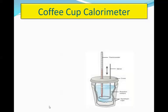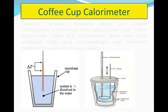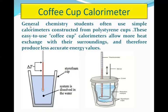The most common example of a calorimeter is a coffee cup calorimeter. As shown in the diagram, this is actually a double-walled coffee cup calorimeter. A double wall is present so as to prevent the loss of heat due to radiation. The system is dissolved in water placed here, a thermometer is placed here, and it is covered with a lid so the rise or change in temperature is measured. General chemistry students often use simple calorimeters constructed from polystyrene cups.